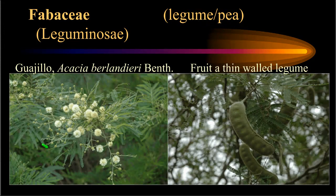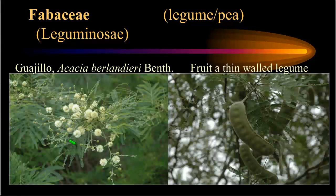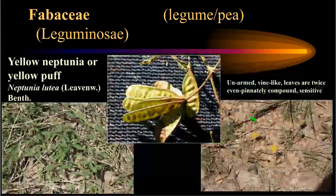In southwest Texas and down through the south Texas plains, another member of this subfamily is Acacia berlandieri. The flowers are in a circular pattern, and what makes the flowers appear white are the numerous stamens coming out of the corolla and calyx. The fruit of the wajia is a thin-walled legume; when it breaks apart, each seed is isolated in individual sections and released separately.